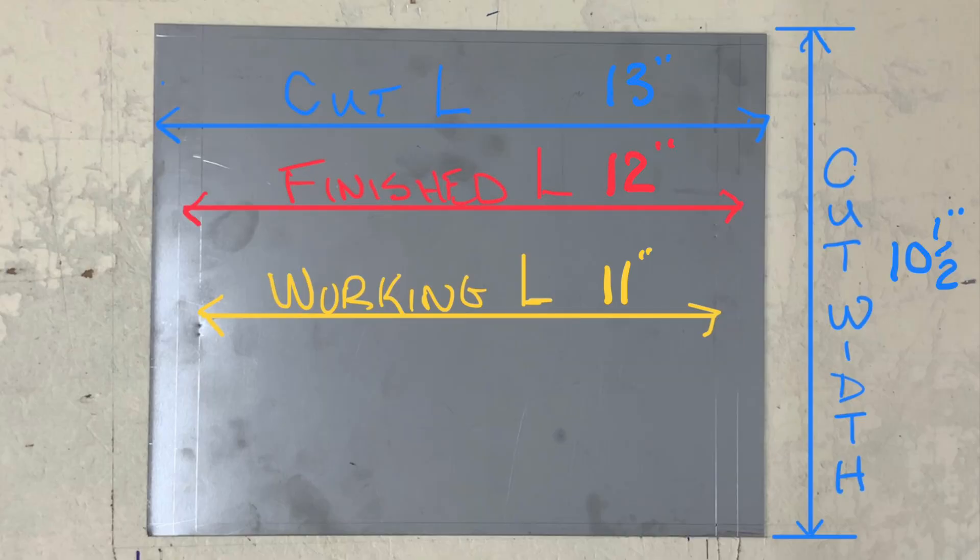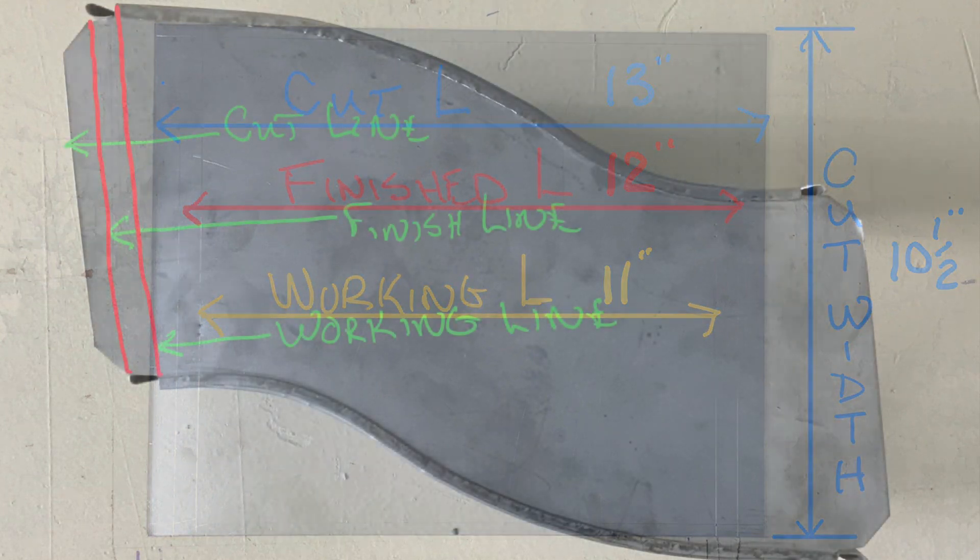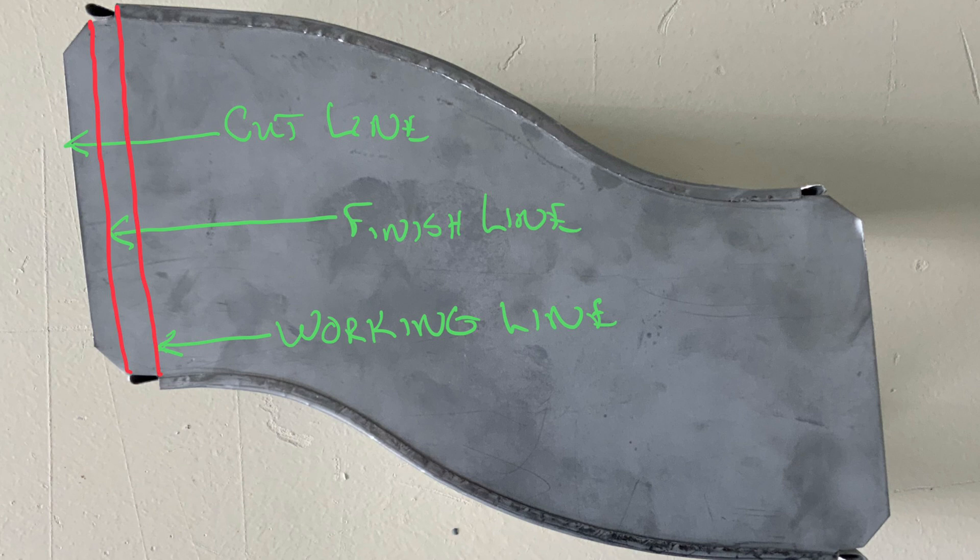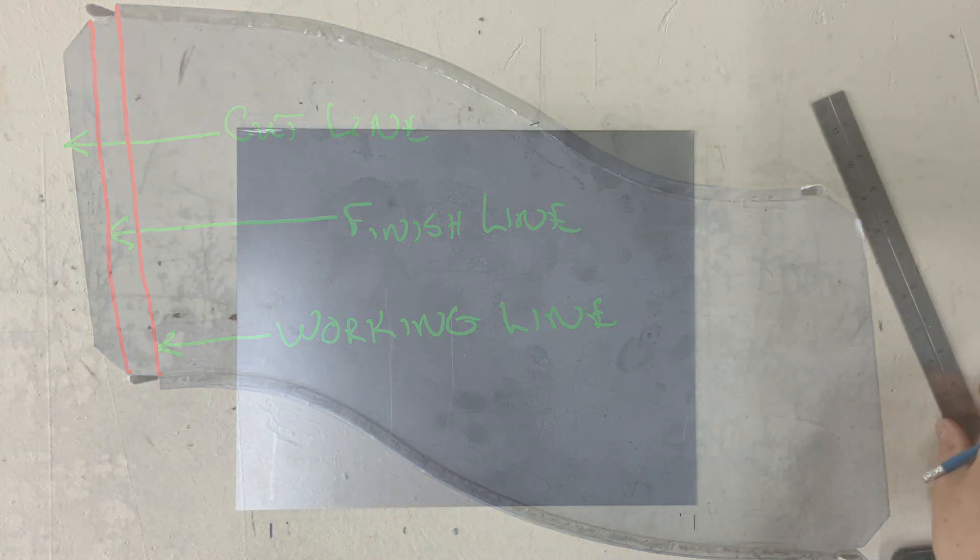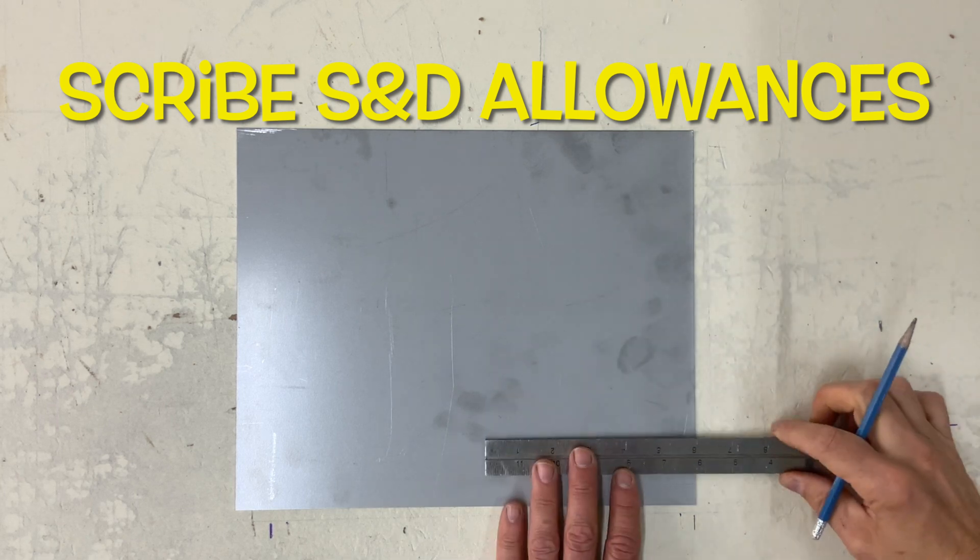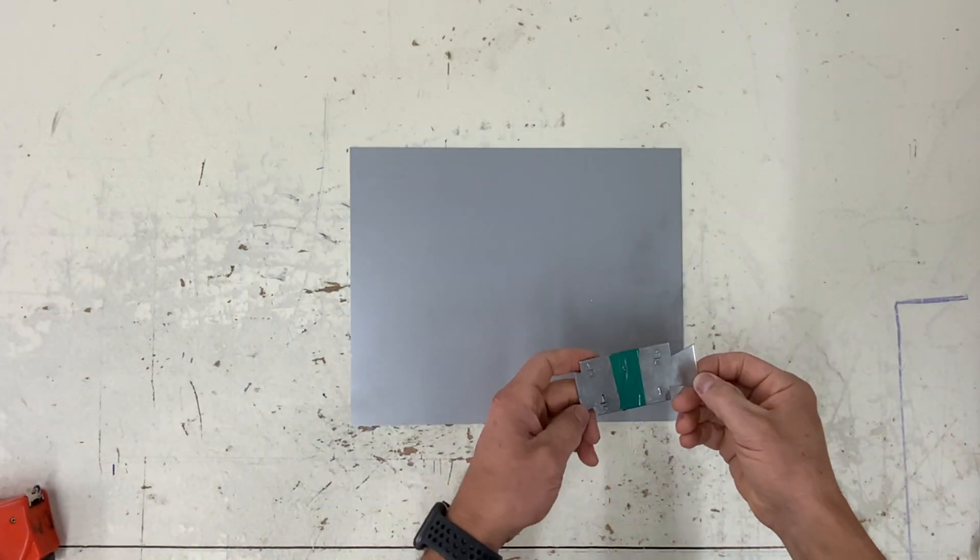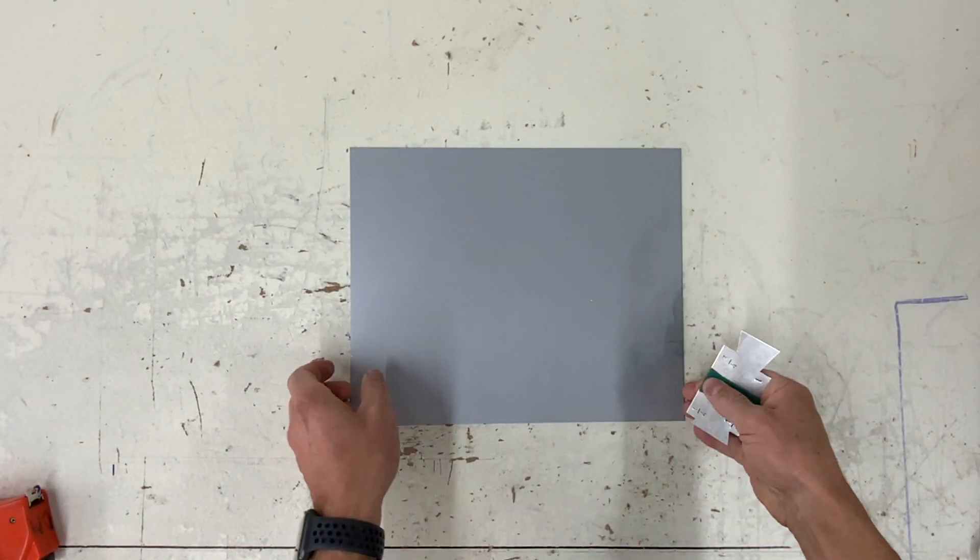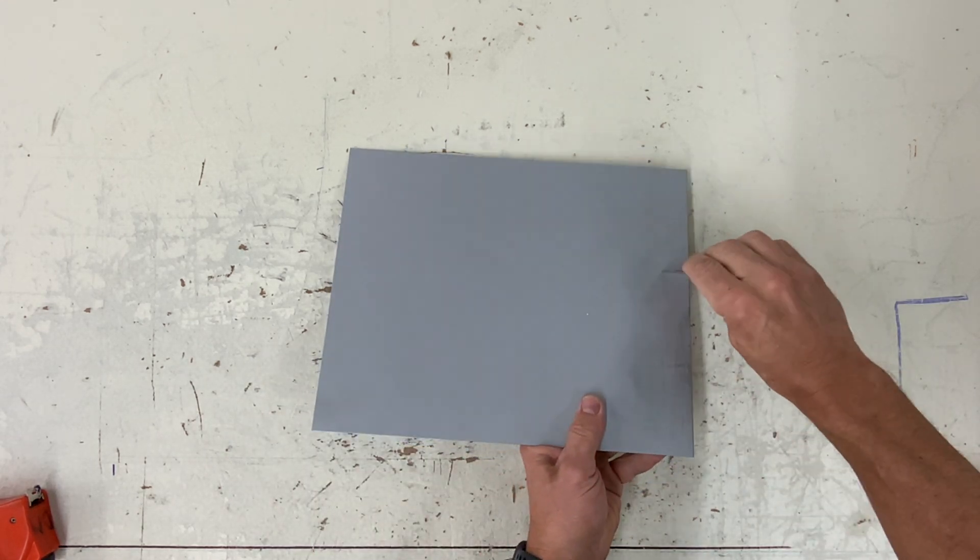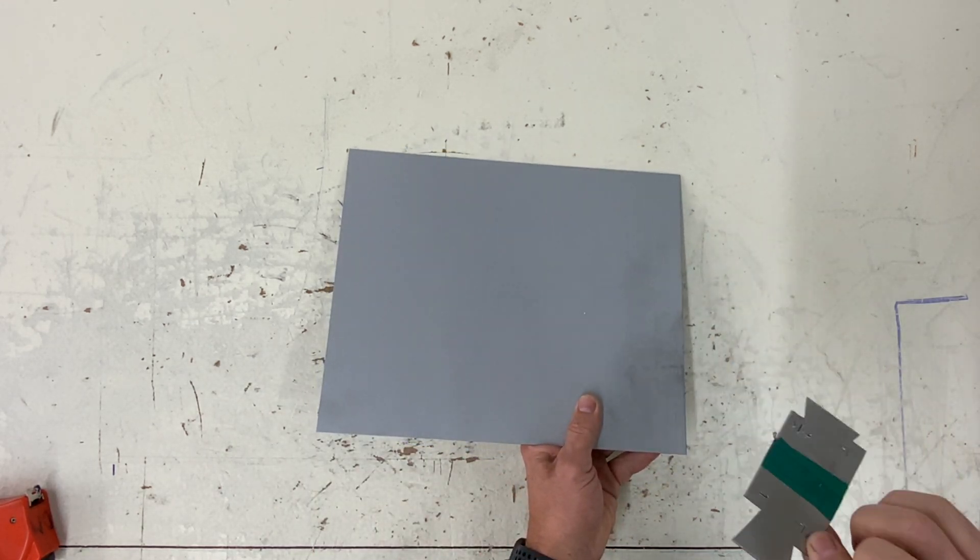I also want you to pay close attention to what these lines are called. There's a cut line, a finish line, and a working line. I'll be using these in my formula later on. These lines are for S and drives. S and drive is the type of connector used on both ends of this fitting to connect to the other duct.